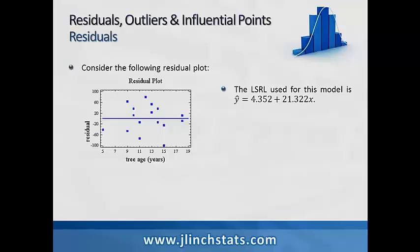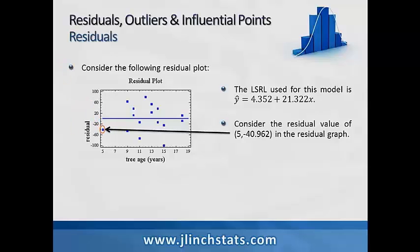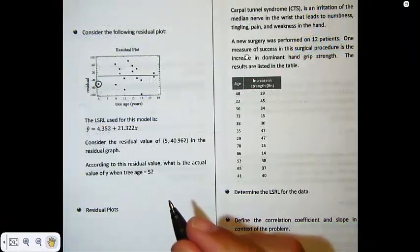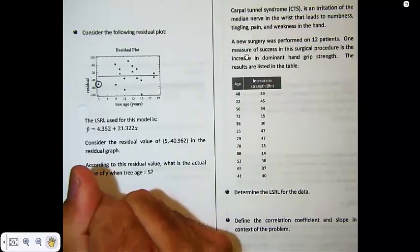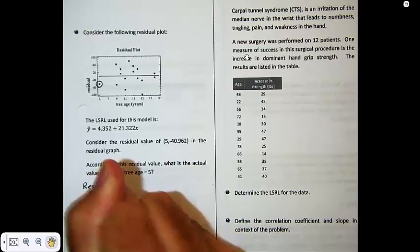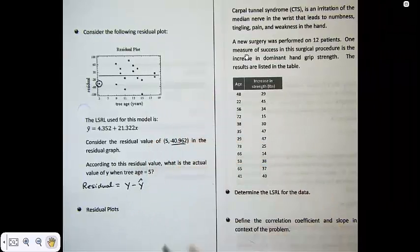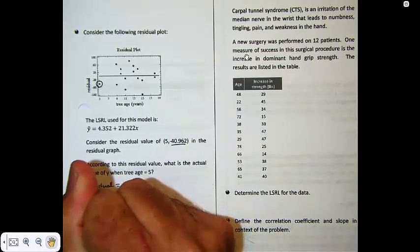The least squares regression line for this model is y-hat = 4.352 + 21.322x. Consider the residual value at (5, -40.962) in the residual graph. This negative residual tells us the actual observation fell below the least squares regression line. We want to find the actual value of y when tree age equals 5, using the residual formula: residual = actual y minus predicted y.